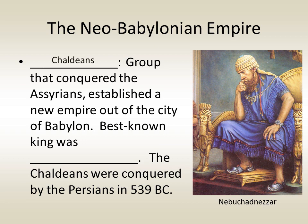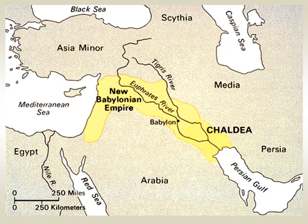The Assyrians were replaced by the Chaldeans, who established a new empire out of the city of Babylon and are sometimes known as the Neo-Babylonians. Their best-known king was Nebuchadnezzar. The Chaldeans were themselves conquered by the Persians in 539 BC. The Neo-Babylonian Empire was nowhere near as large as the Assyrian Empire.